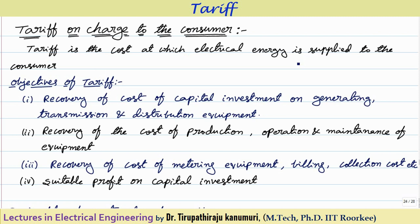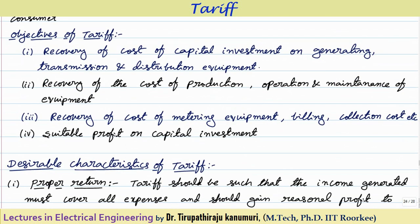Before designing the tariff — that means how much we have to charge per unit — the basic objectives of the tariff will be recovery of the cost of capital investment on generation, because we have seen about power plants, along with the transmission lines. Similarly, on the distribution system also there is an investment. This includes transmission and distribution lines, transformers, switchgear, and maintenance.